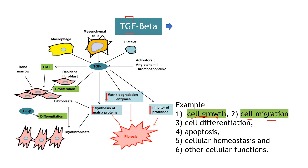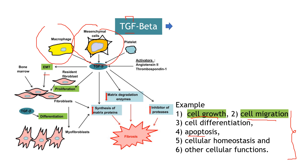Similar to KRAS that we talked about last time, these produce many signals and depending on the tissue, some of those signals can be opposite — like apoptosis here. For example, in macrophages, mesenchymal cells, the epithelial-mesenchymal transition — there are a lot of functions depending on the tissue. TGF-beta is involved in so many processes.